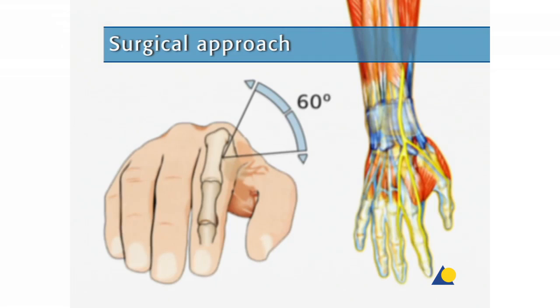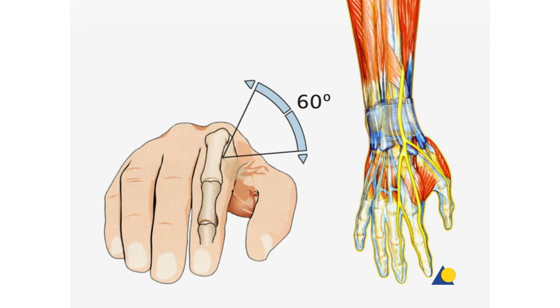The Schanz screws in the second metacarpal can safely be placed in a 60-degree dorsoradial arch. The position of the Schanz screws in the radius depends on the soft tissue situation and the position of the neurovascular structures.